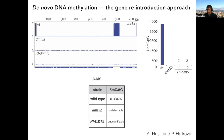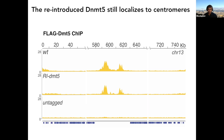The reintroduced DNMT5 still localizes to centromeres — it ChIPs well. There's a little less H3K9 methylation at centromeres in the reintroduced strain, but there's plenty there; it's sitting on chromatin and not doing anything.